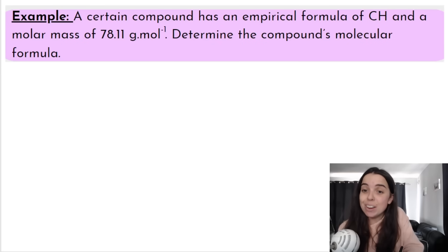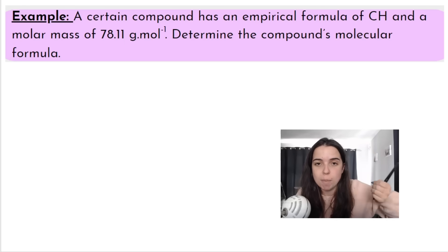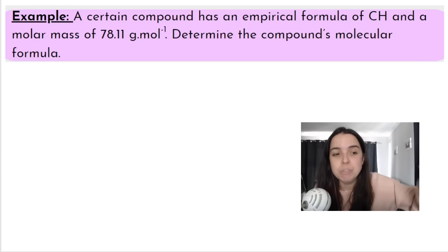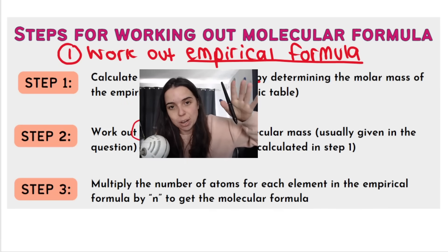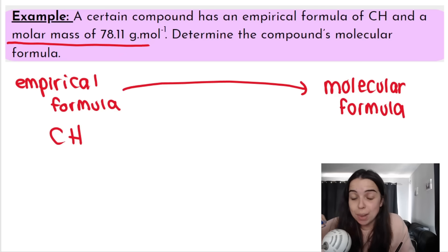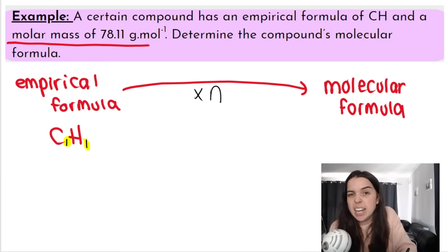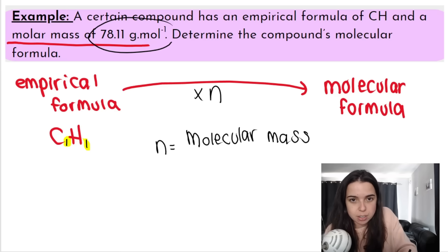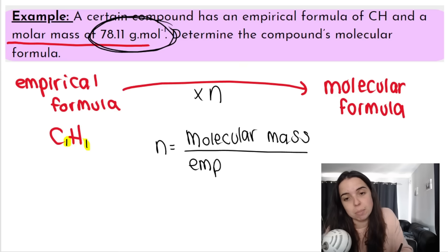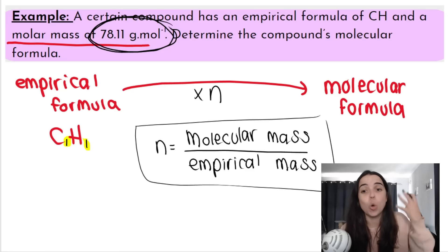This first example is straightforward. A certain compound has an empirical formula of CH — if they don't give you the empirical formula, you'd need to work it out first. They also give the molar mass of the compound and ask for the molecular formula. To go from empirical to molecular we multiply by n. The empirical formula is CH, which means C₁H₁. We need n, which we calculate using molecular mass divided by empirical mass.